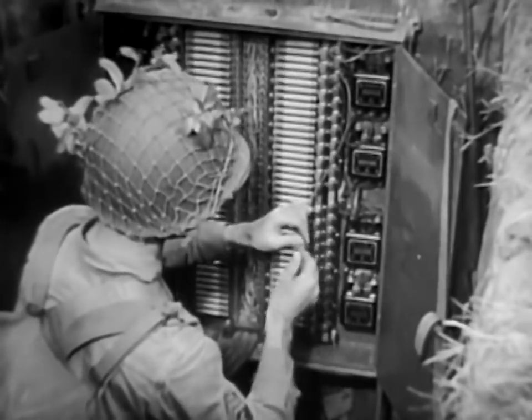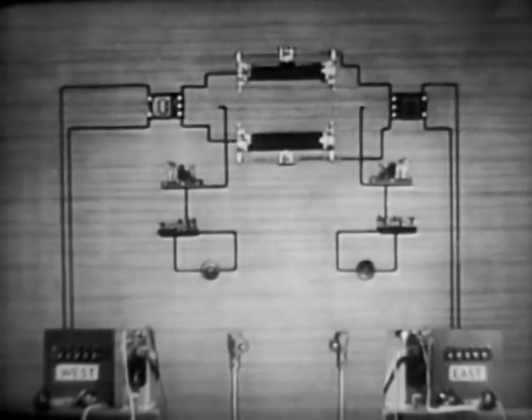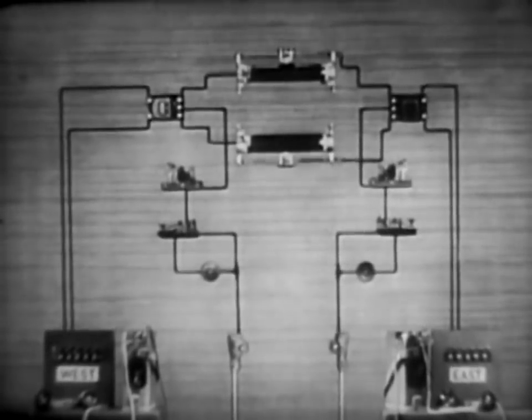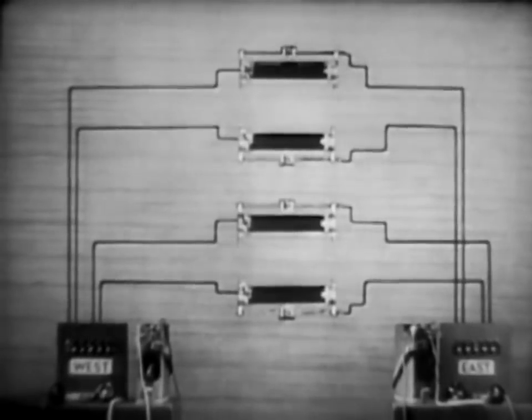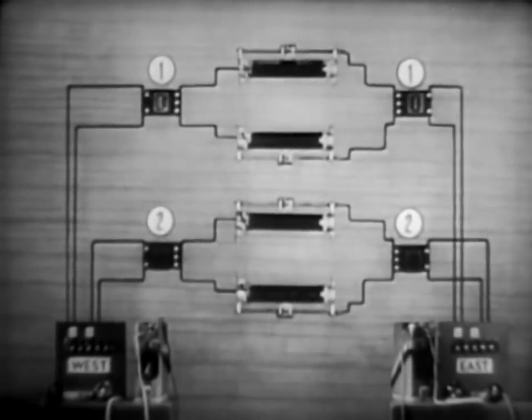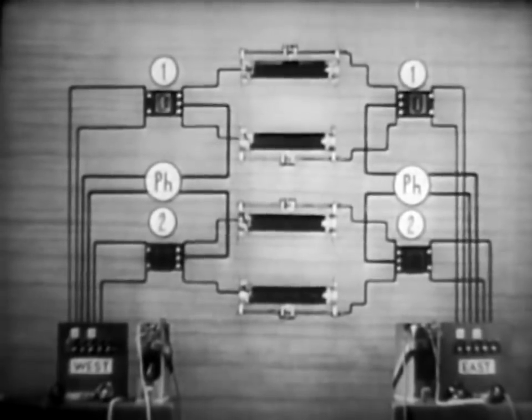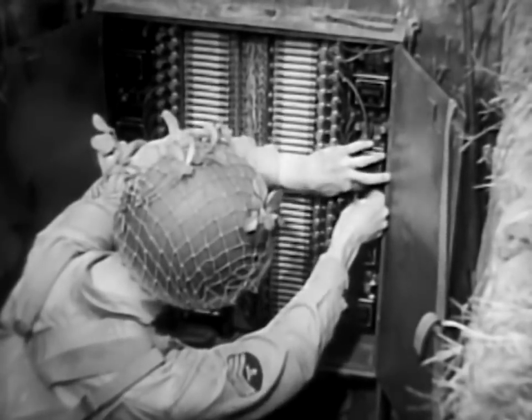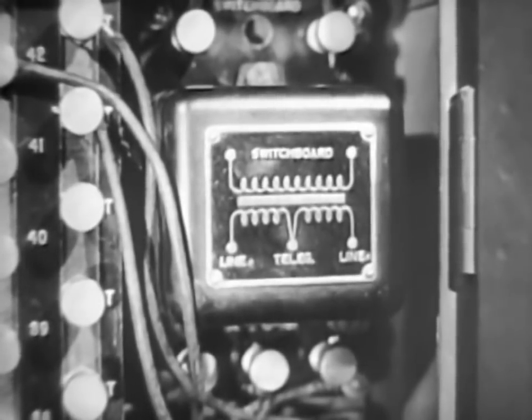Simplex and phantom circuits are used extensively throughout the army. Every wire man should know how they work. The simplex circuit is obtained by connecting repeating coils at both ends of a line and using the earth as a return conductor. The phantom circuit is obtained by connecting repeating coils at both ends of two lines. Instead of using one telephone line and the earth as conductors, the phantom uses two telephone lines. Because simplex and phantom circuits increase the telephone and telegraph capacity of existing lines, the proper use of repeating coils eliminates the trouble, danger, and time of laying miles of extra wire.